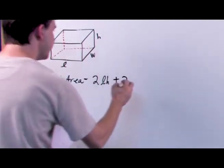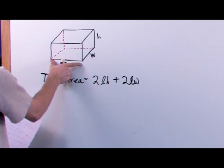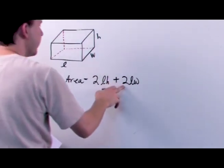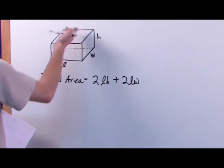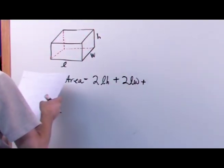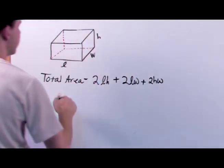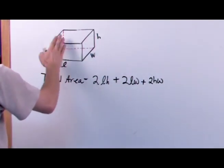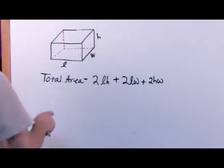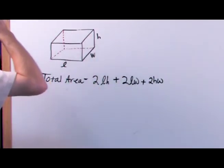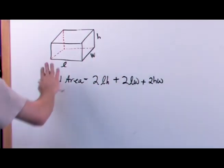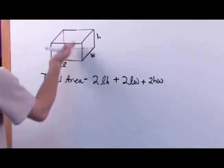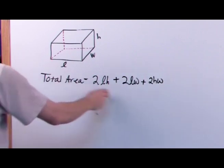Plus two times LW: the length times the width gives you the area of the bottom, and there's a top with exactly the same shape, so two times LW gives the area of the bottom and the top. And then the final term is two times HW: H times W gives the area of one side, and there's another side with exactly the same dimension, so two times HW gives the area of both sides added together.